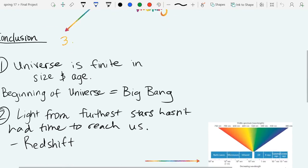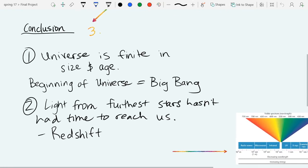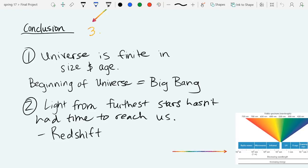There are a couple explanations for why the night sky is dark. One, the observable universe is not infinite in size and age, like Olbers assumed. Stars also die and are formed over time. The darkness of the night sky implies that our universe had a beginning, which we call the Big Bang.